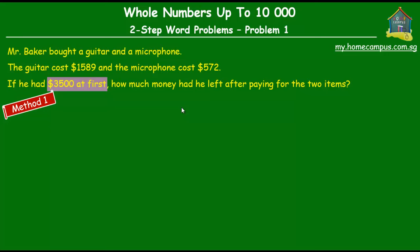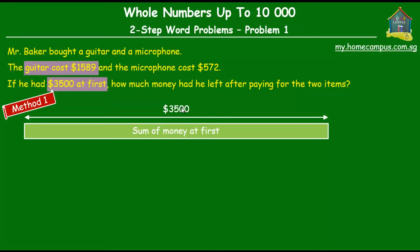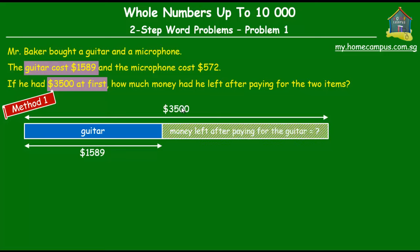He had $3500 at first. On the model diagram, we will put the sum of money he had at first — this unit represents $3500. He used $1589 to buy a guitar, so on the model diagram this unit is equal to $1589. From the $3500 he had, he spent $1589 on the guitar. The money left after paying for the guitar is the shaded block shown.